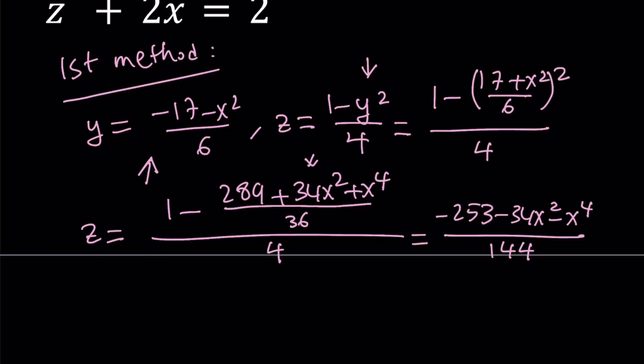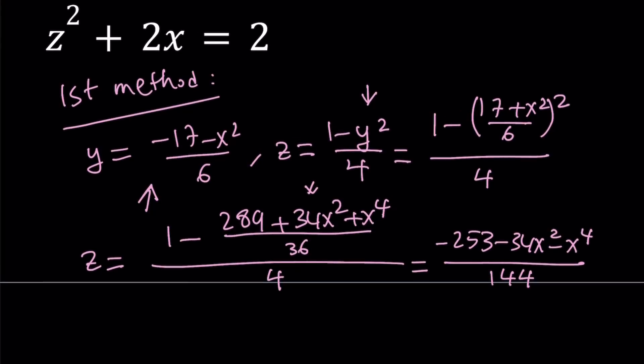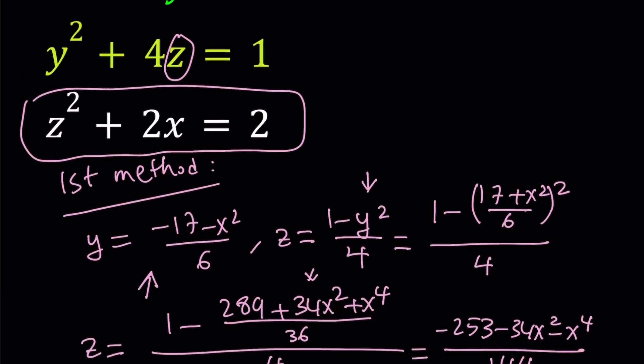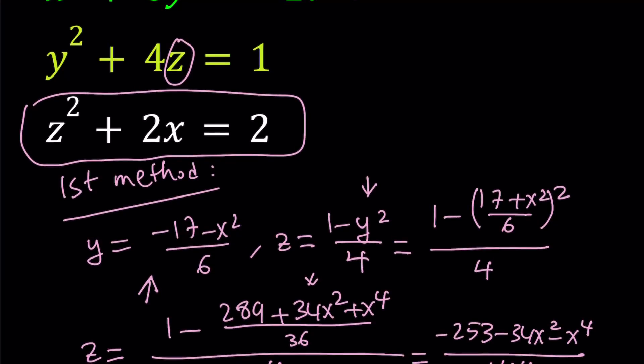And then minus 34x squared, because everything here will be negated because of the minus sign. And I'm going to subtract x to the fourth power. And that is going to be divided by 36 times 4, which is 144. So that is z in terms of x. And we already got y in terms of x.